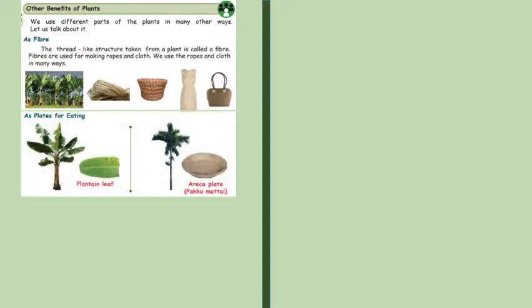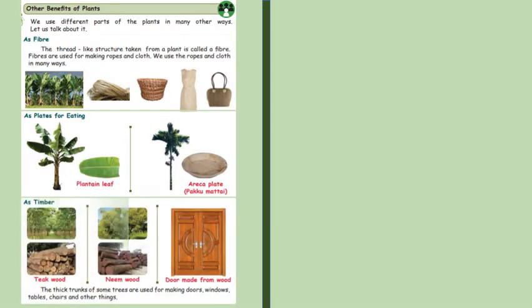As plates for eating from plantain, like a plantain leaf or areca plate. Then we have timber: teak wood, neem wood, doors made out of wood. The thick trunks of some trees are used for making doors, windows, tables, chairs and other things.